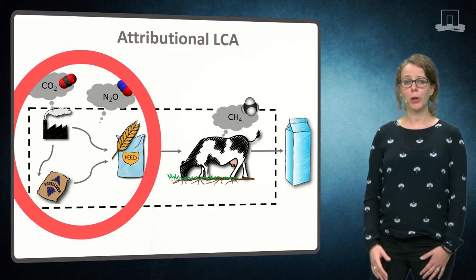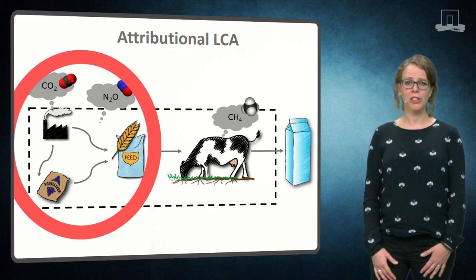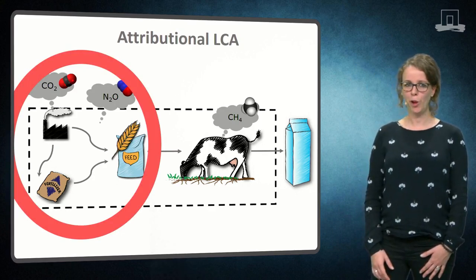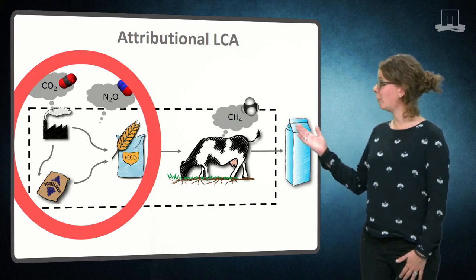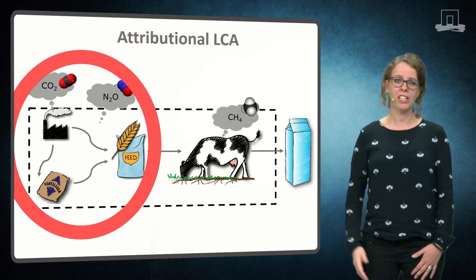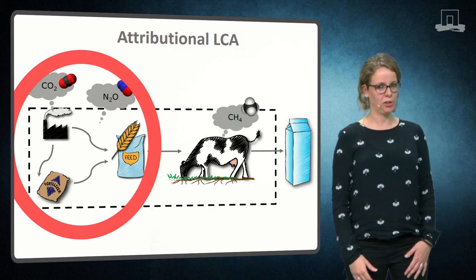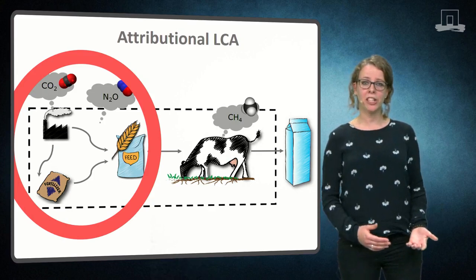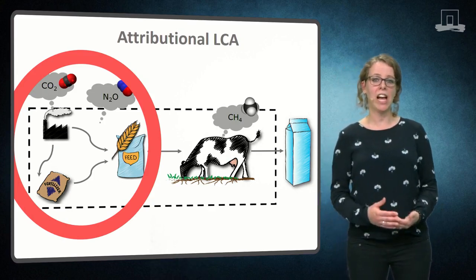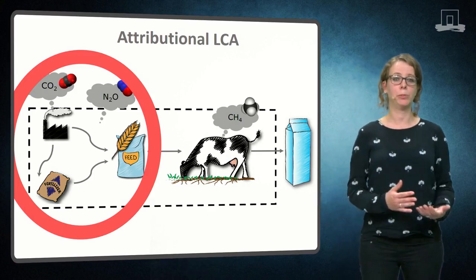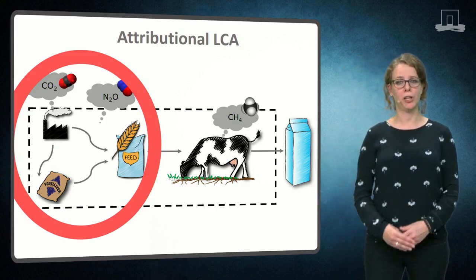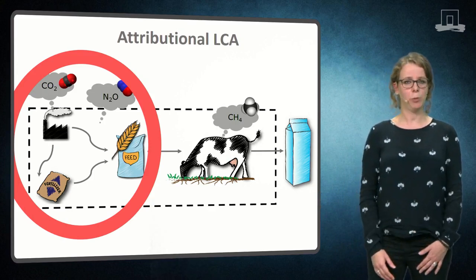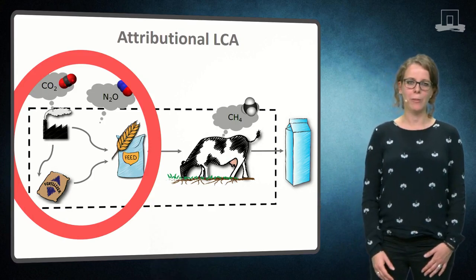Once you know the current situation, you might think about an improvement option. For example, you notice that feed production is an important hotspot. Replacing a main product like cereals in a cow's diet with appropriate co-products, such as wheat middlings, is stated to be more environmentally friendly.